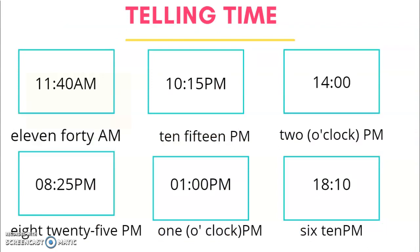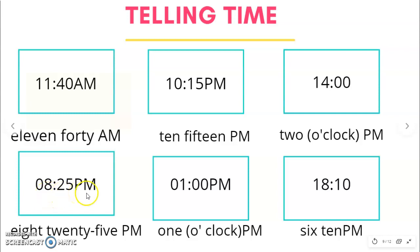Now here we're going to see how we can tell time. We'll give some examples on how to read the time. In English, I will say 11:40 AM. The next one — I have 8:25 PM. Here, for example, I have 10:15 PM. Here I have 1 o'clock. I can say '1 o'clock in the afternoon' or I can say '1 PM.'